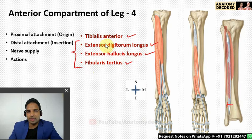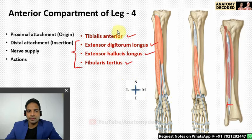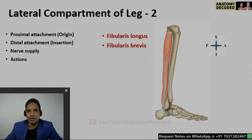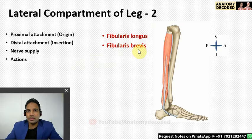The actions of the other three anterior compartment muscles also include dorsiflexion at the ankle joint.